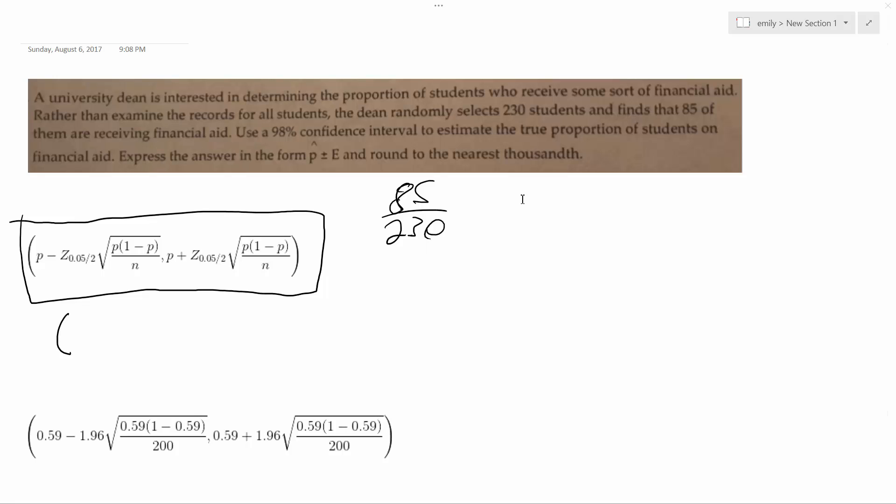So this ends up being, well it simplifies down to 17 over 46, which is approximately 0.3696 on and on, but we'll round it down to 0.37.